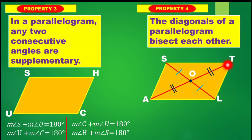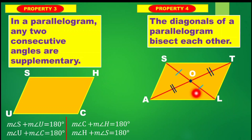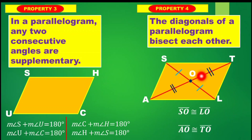They bisect each other at point O. Therefore, segment SO and segment LO are congruent segments. And segment AO is congruent to segment TO.